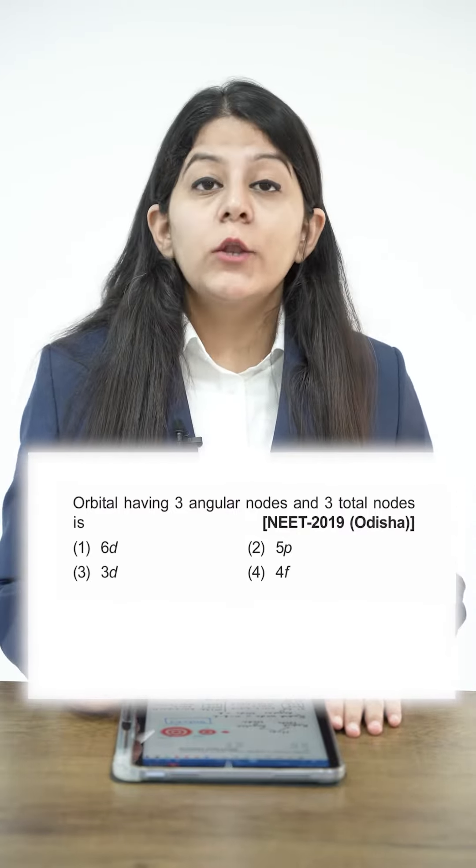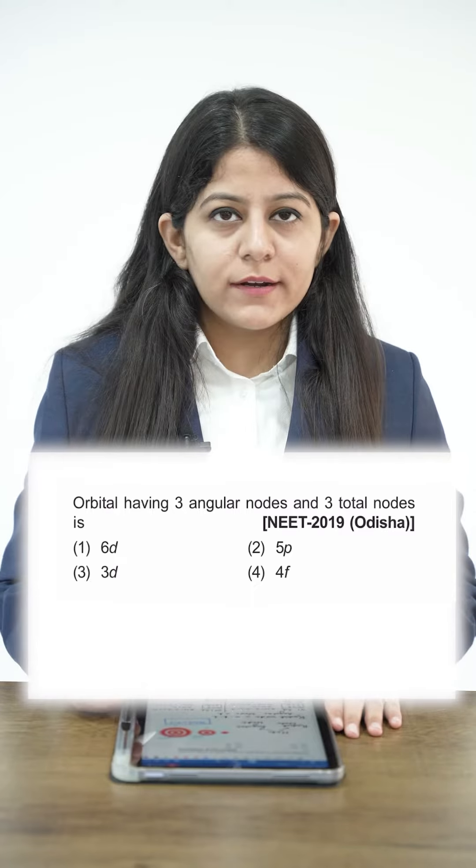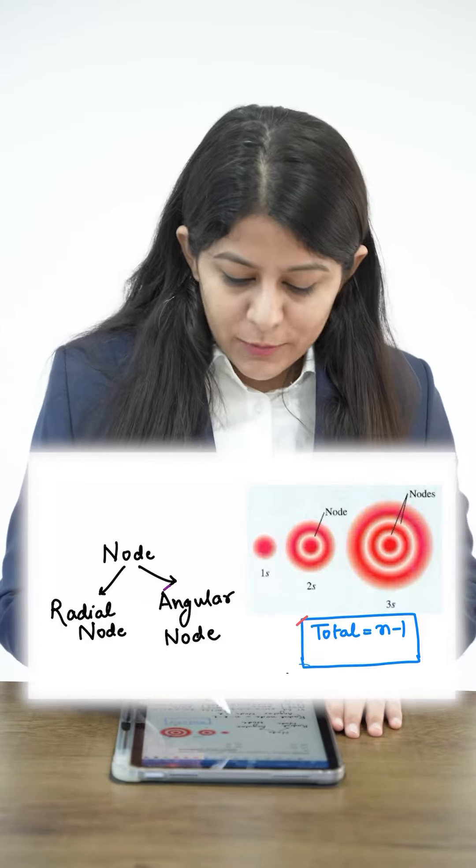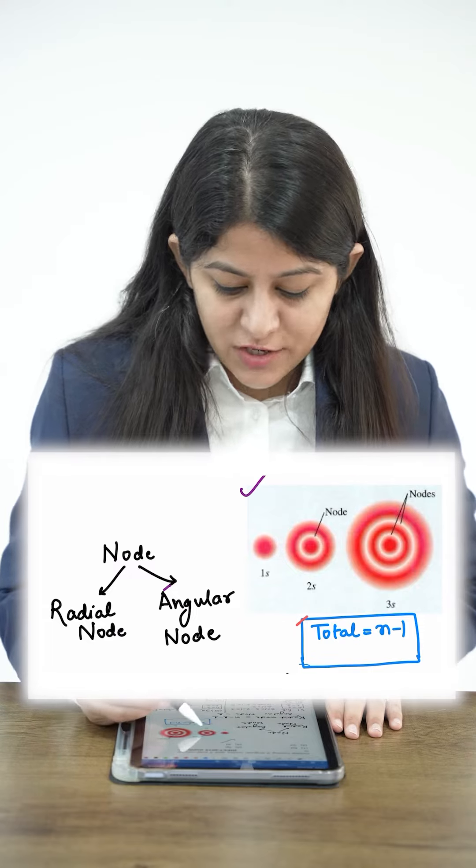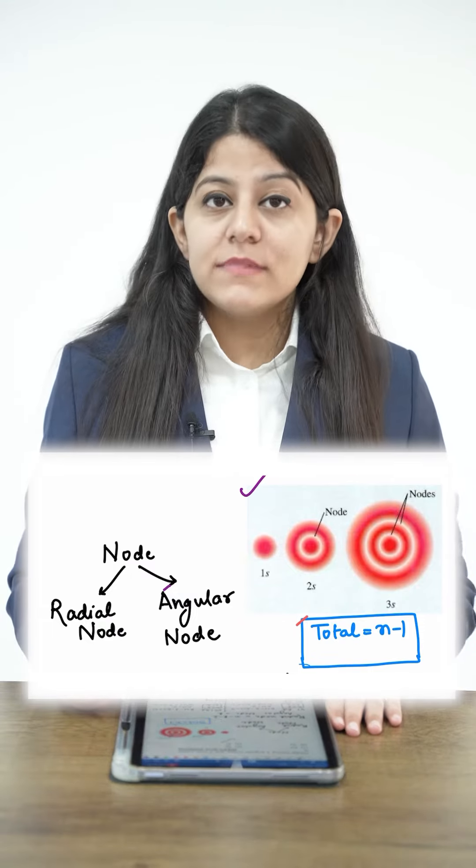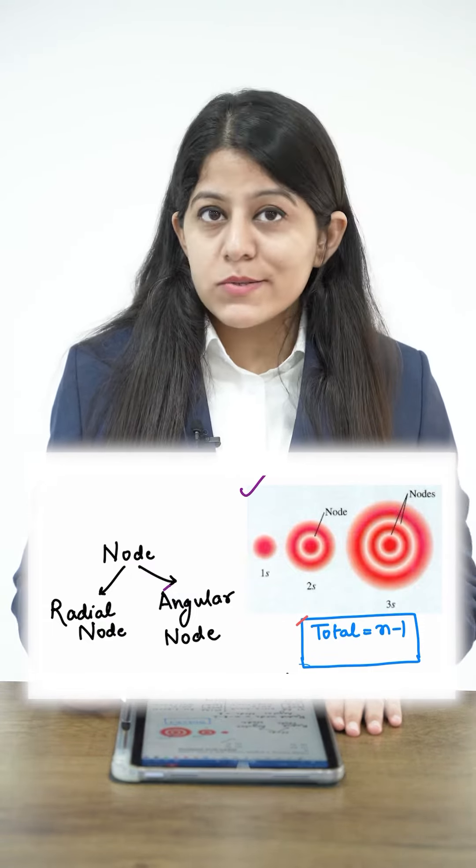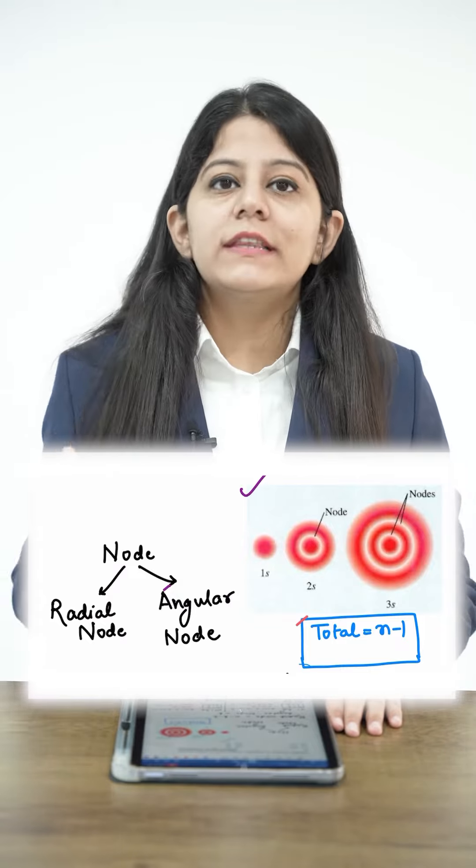So what is a node? A node is a region around the nucleus where the probability of finding an electron is zero. You can see in this image there is a white region which represents a node, that means the probability or chances of finding an electron in this region is zero.